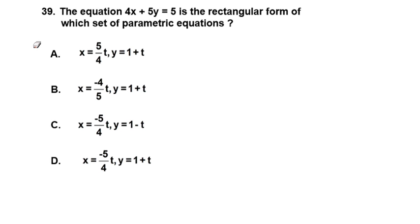This begins a set of parametric equation problems, and I think this one is probably the most difficult of the types of problems. The reason I say so is that we're given an equation, 4x plus 5y equals 5. This is an equation in rectangular form with x and y, but standard form, as opposed to the slope-intercept form.